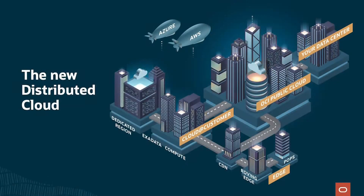So when you bring all of this together, what does it really mean for customers? It means that unlike the days in the past where you had to make significant trade-offs between the public cloud or do-it-yourself on-premise, you now get a full suite of distributed cloud solutions. You can get cloud options available across the public cloud, in your own data center with dedicated region, Exadata Database Cloud at Customer, Compute Cloud at Customer, and integrating those things across multiple public cloud providers with multi-cloud solutions. The distributed cloud is a huge investment area for Oracle, and you're going to continue to see significant investments from us in that area going forward.